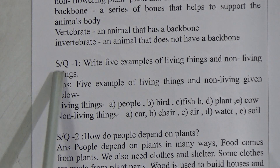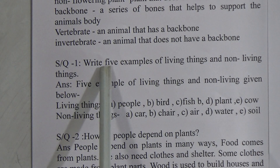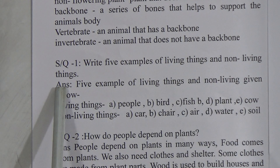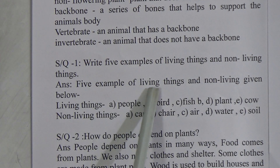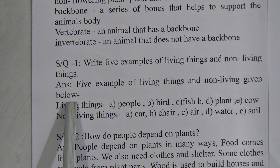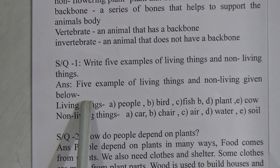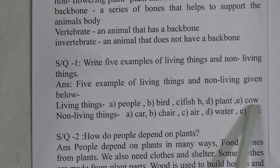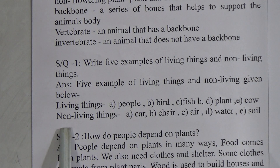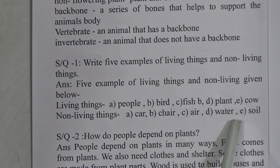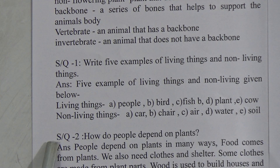Now for the short question answer. Question one: write five examples of living and non-living things. The answer is — five examples of living things: people, bird, fish, plant, cow. Five examples of non-living things: car, chair, air, water, soil.